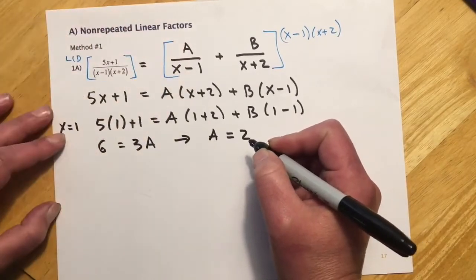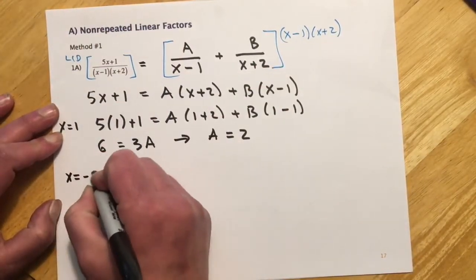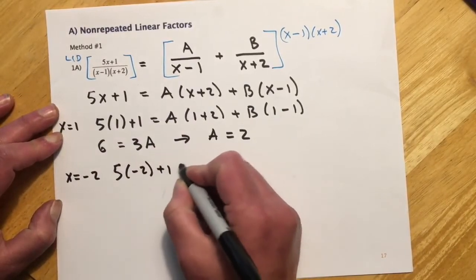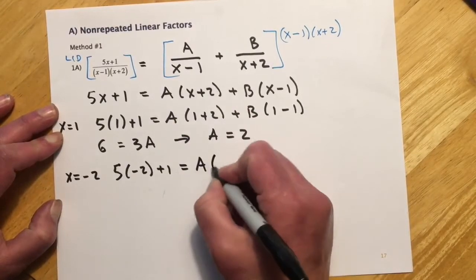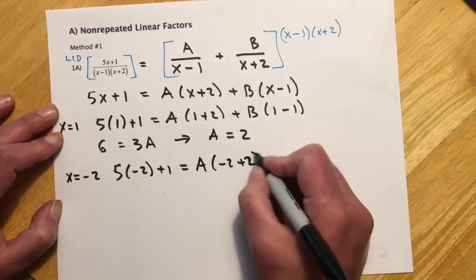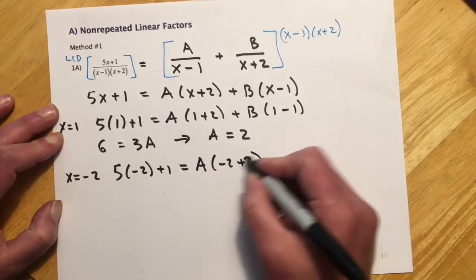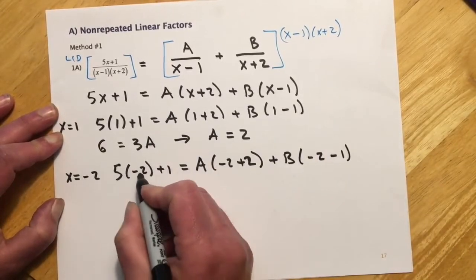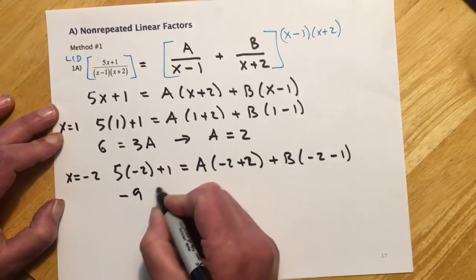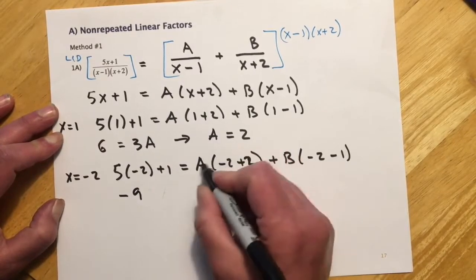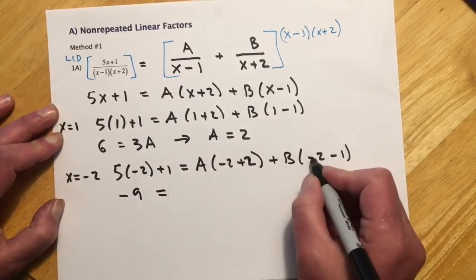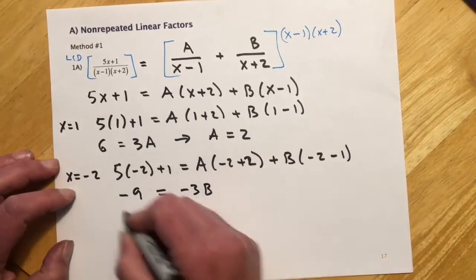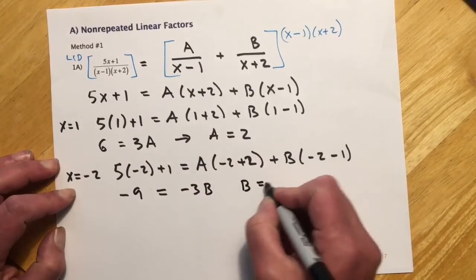And that's this piece back up here, that's that constant. And I'll use the other zero, x equals negative 2. So that'll be 5 times negative 2 plus 1, and then A times negative 2 plus 2. So we could just not write that piece, but just for me to show it. So this would be negative 10 plus 1 is negative 9. And then this would be A times 0, so that drops out. So that's equals, minus 2 minus 1 would be minus 3B. And then dividing the 3 over, I get B equals 3.